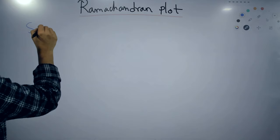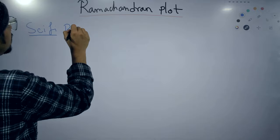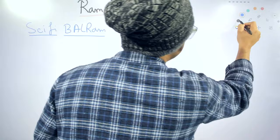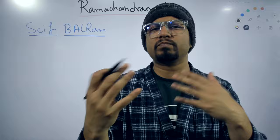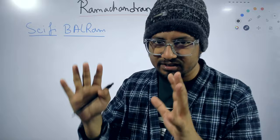The mnemonic is: sci-fi balraam. Sci-fi means science fiction. Sci-fi balraam — this is what you need to remember. If you remember this particular sentence, sci-fi balraam, that's it. You are going to construct a whole Ramachandran plot — the one you see in images that you've probably tried several times to remember but failed. You can easily do that with sci-fi balraam. Within 5 minutes, you'll know exactly how to construct it.